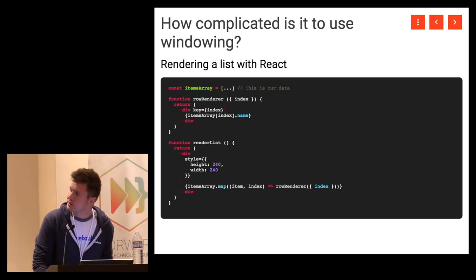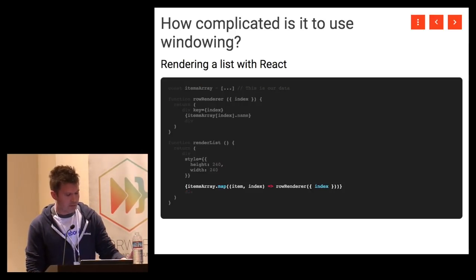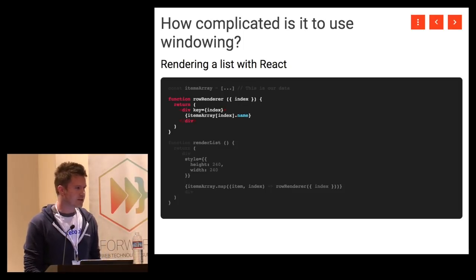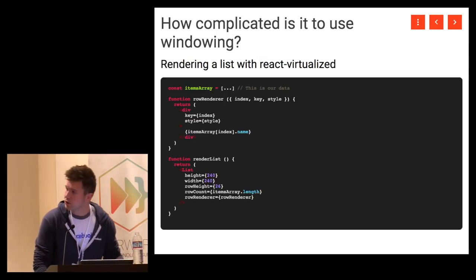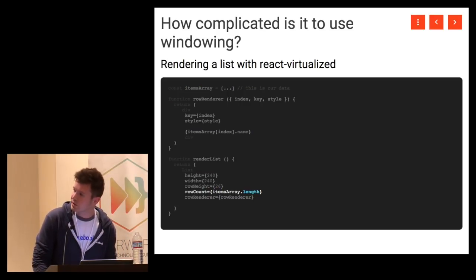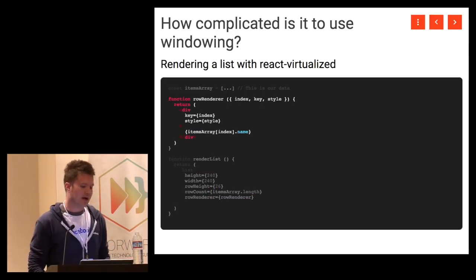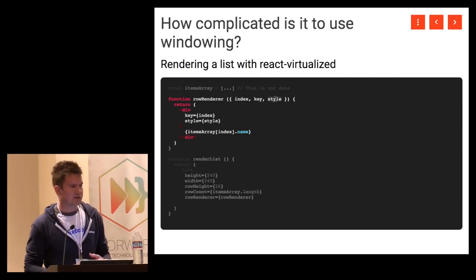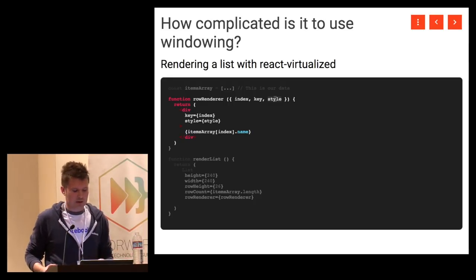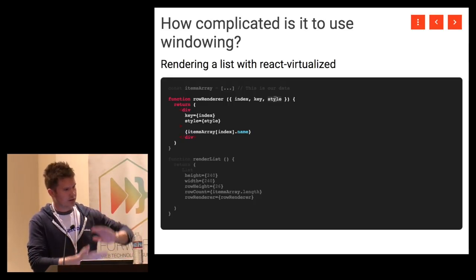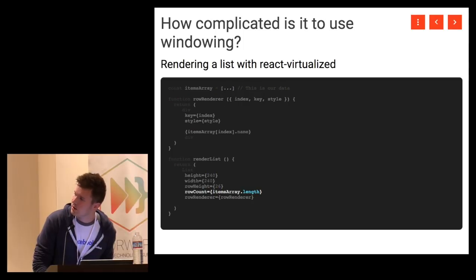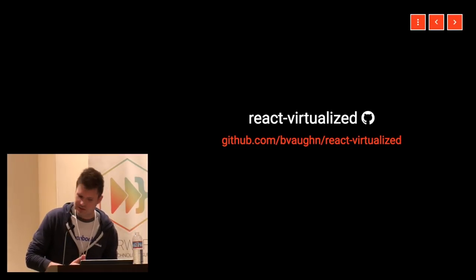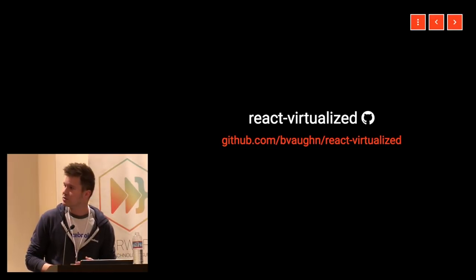What about how complex it is to use? The original non-windowed list works by mapping over an array with a function that renders each item. Looking at the same list rendered with a windowing library, it's no more code. You typically pass the number of items in the array and the function to render each item. The function takes an index and a style — the index tells you which item to display and the style tells React where to position the item within the larger scrollable list.